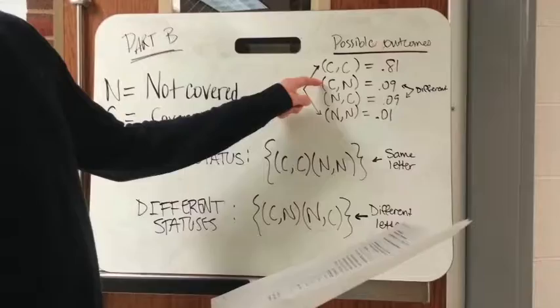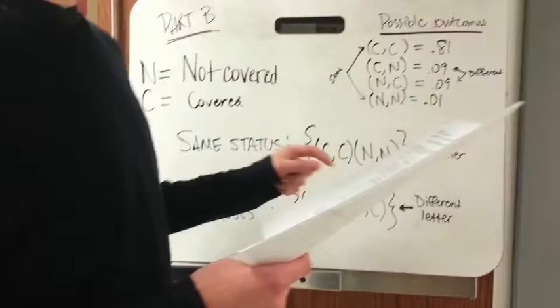These are possible outcomes, and these are the only ones that are different, because C,C and N,N are the same. So for different, we just say 0.09 and 0.09, and we add them up, and you get 0.18.